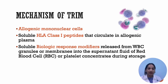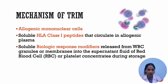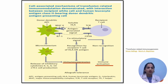Coming to the postulated mechanisms of TRIM. TRIM can be due to allogeneic mononuclear cells or WBCs present in the blood component, or due to soluble HLA class 1 peptides circulating in the allogeneic plasma, or due to soluble biologic response modifiers released from WBC granules or membranes into the supernatant fluid of red cells or platelet concentrate during storage. We will be dealing with all these mechanisms one by one.